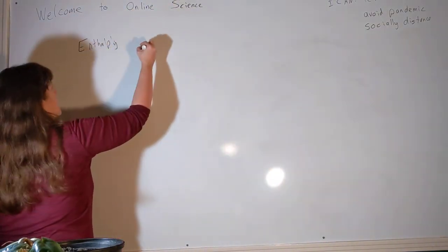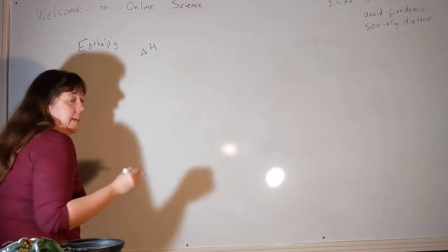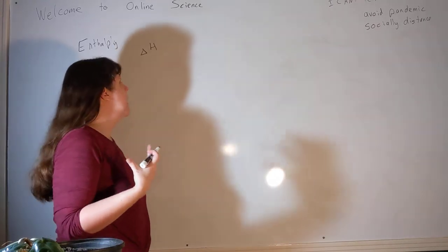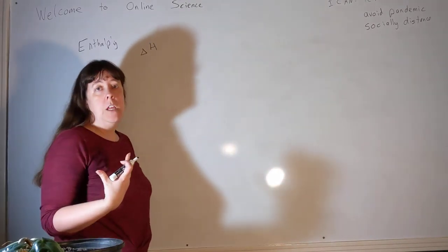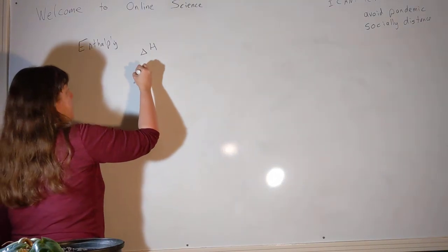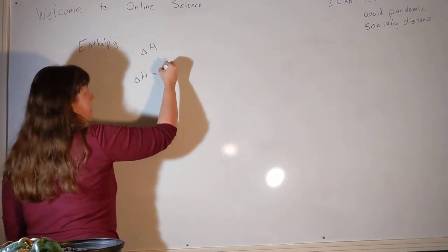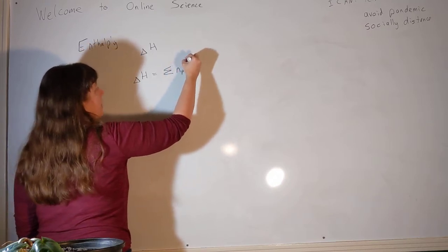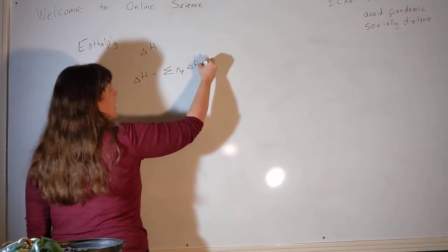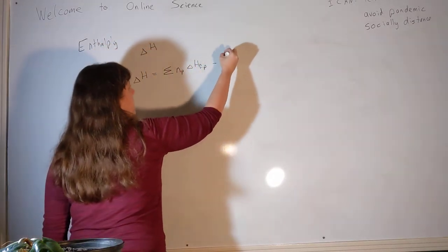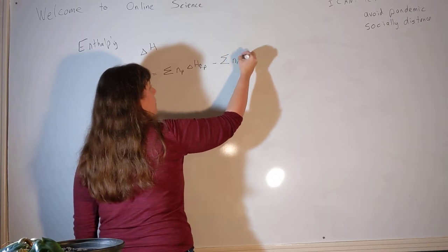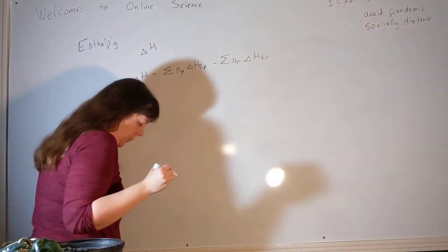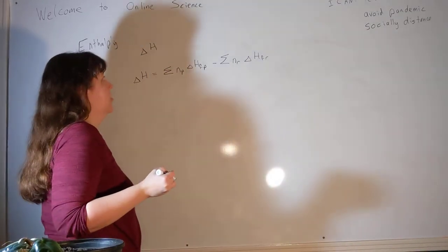The symbol that we use for enthalpy is always going to be delta H. As the video said, we can talk about a change in enthalpy, but we can't talk about an actual value for enthalpy. The enthalpy equation that we're going to use is that the enthalpy for a reaction is equal to the sum of the coefficients of the products times the heat of formation of the products minus the sum of the coefficients of the reactants times the heat of formation of the reactants. This is one of those equations that looks much harder and scarier than it actually is.